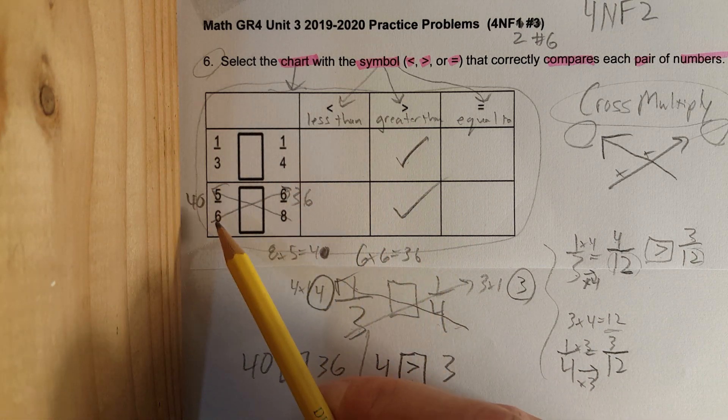So one third is greater than one fourth, and five over six is greater than six over eight. I need to find the chart that has this. Remember, I use the strategy of cross multiplying. I go up, multiply, go over to the right, multiply. Eight times five is forty, six times six is thirty-six. Let's see your chart. Which one has greater than, greater than for this problem? It looks like it's C.